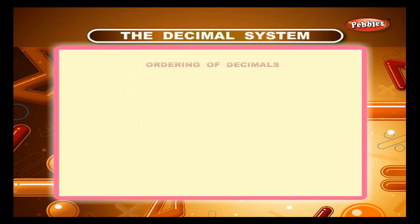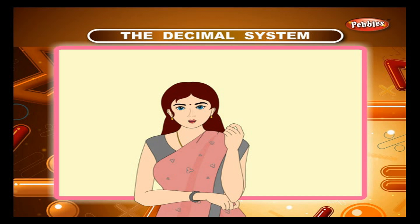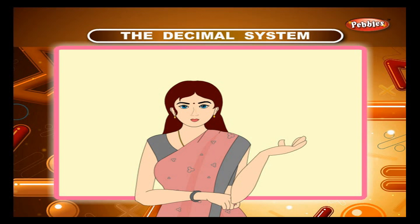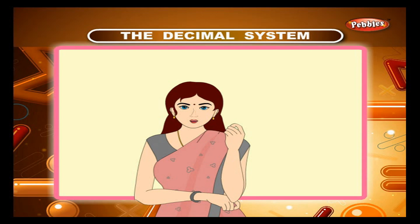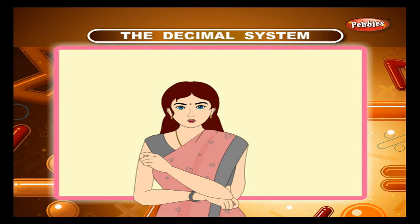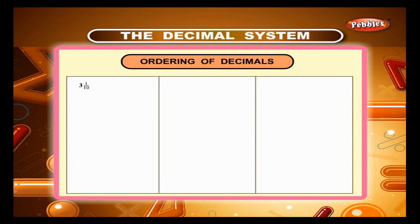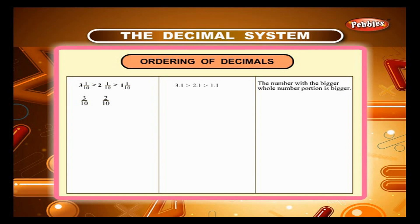Ordering of decimals. We know how to compare two fractions. Let us use our knowledge to compare decimals. First convert the fractions into decimals and then compare the numbers. For example, 3/10, 2/10, 1/10 when converted into decimals gives 0.3, 0.2, 0.1. The number with the bigger whole number portion is bigger. Similarly, 3/100, 2/100, 1/100 when converted into decimals gives 0.03, 0.02, 0.01.